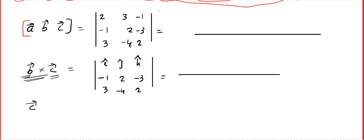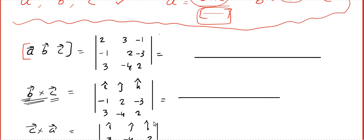And then comes C cross A. Determinant i, j, k. What is C? 3, minus 4, 2, and then A, 2, 3, minus 1.